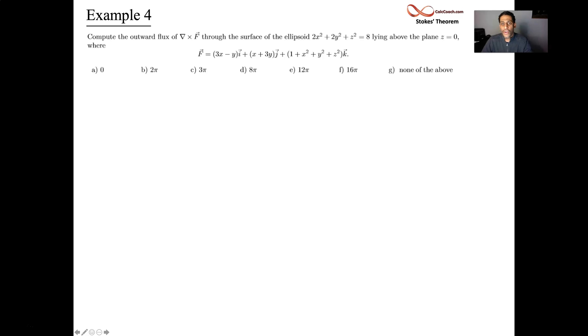Calculate the outward flux of the curl. This time, we're talking about an ellipsoid. That's a football or a pill shape. The part of the ellipsoid that lies above the xy plane. The z equals 0 is the xy plane. And we have this vector field here. We're not going to calculate the flux of the curl. What we're instead going to do is use Stokes' theorem and calculate the line integral around the boundary.